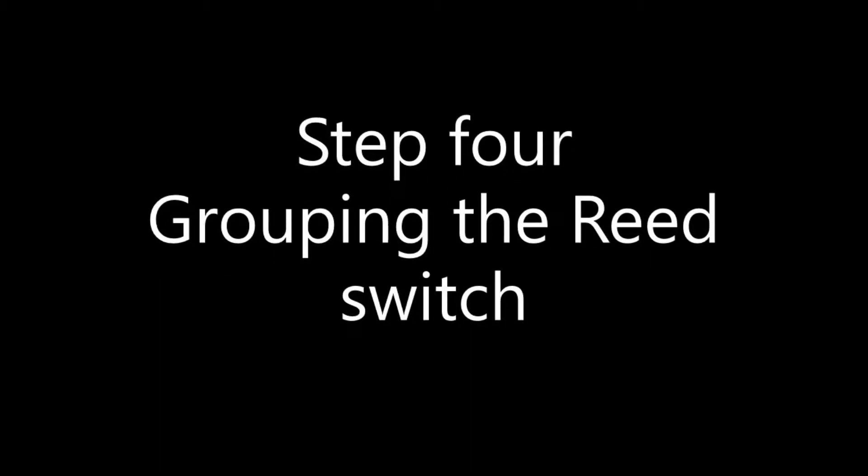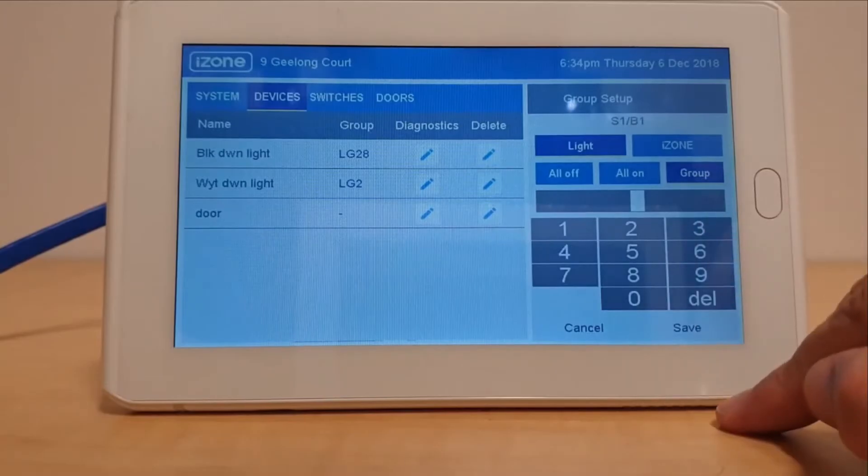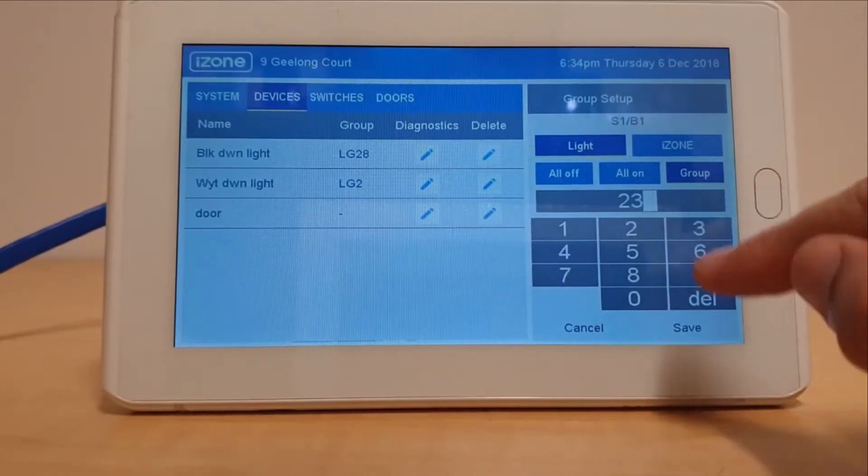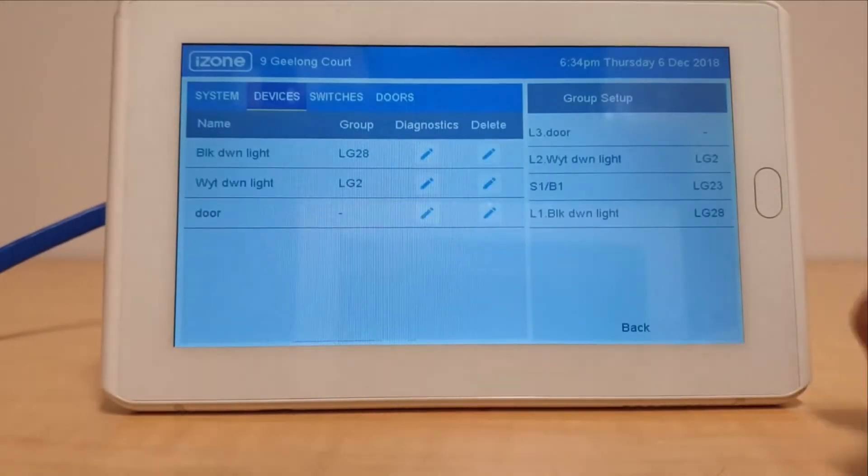Step 4: Grouping the reed switch. While in group setup, press the hyphen next to the switch ID, then assign the reed switch with the same group ID as the smart power point.